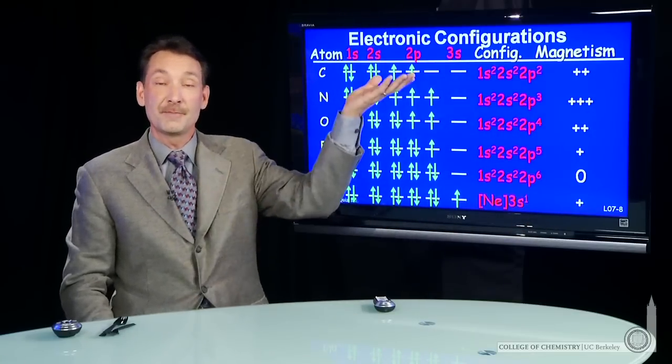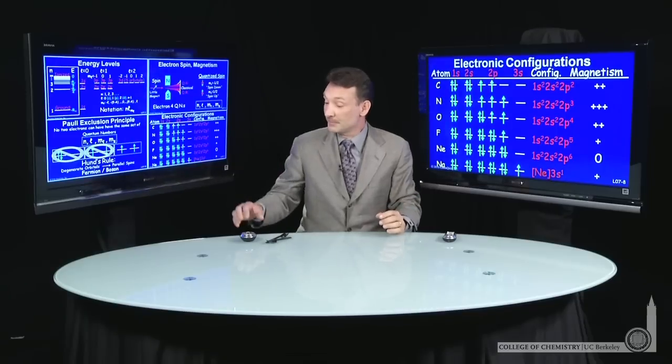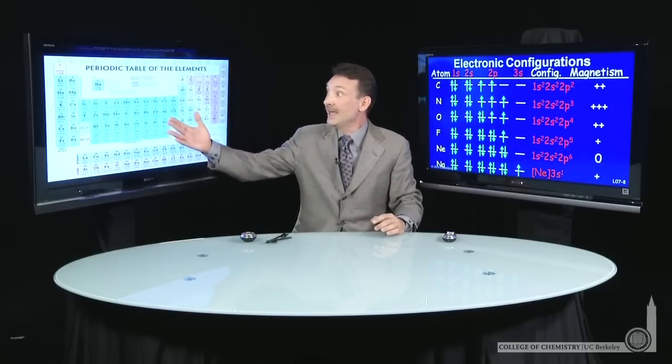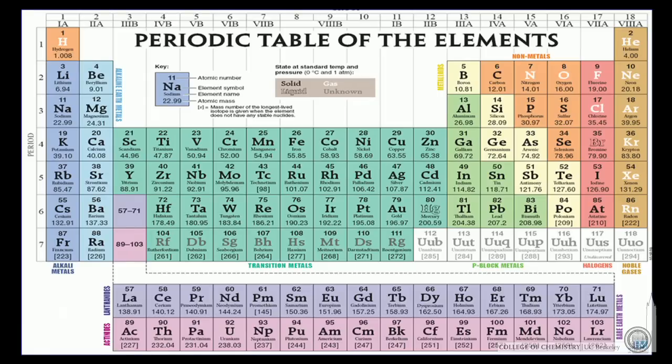So what we're doing is we're filling up the periodic table. And we can look at the periodic table and now start to understand how it works. So hydrogen and helium, 1s1, 1s2. Now lithium and beryllium will have 2s1, 2s2.